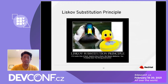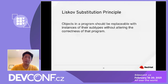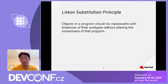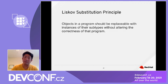Liskov Substitution Principle: any object in a program should be replaceable with an instance of a subtype without changing the correctness of that program. That allows you to take on a subtype or a more granular object when your business requirement changes — you can spin off another subtype that contains the new business requirement, and when you fit that object into the main program, the program should not need to change.